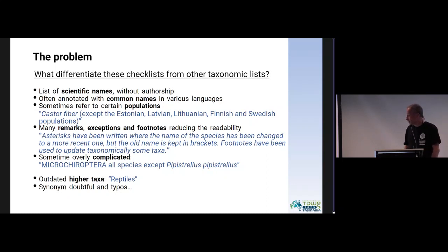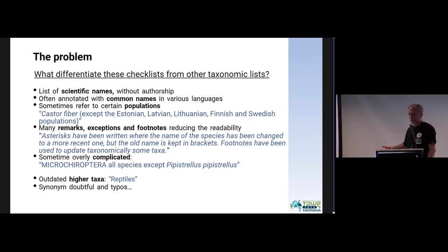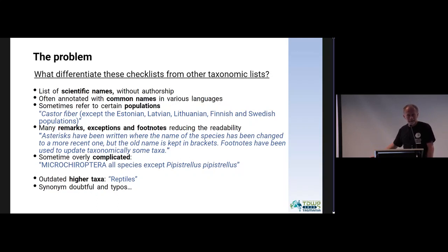You have an example like this — Microchiroptera, all species except one, the Pipistrellus. So what does it mean? What species are covered by this legislation? It's really hard — it's not just a single taxon, it's not the genus, it's a genus minus one species. How can you express that in a machine-actionable thing?